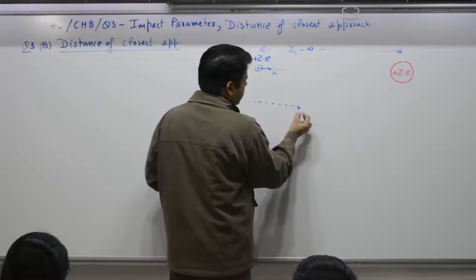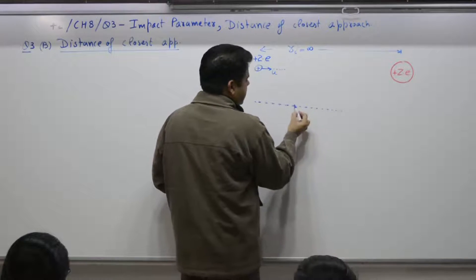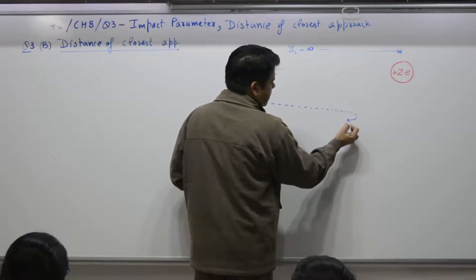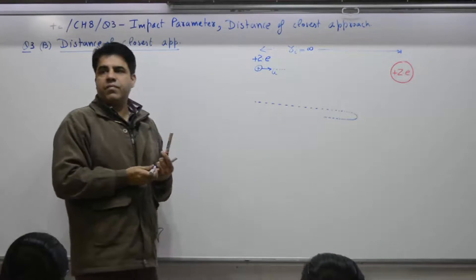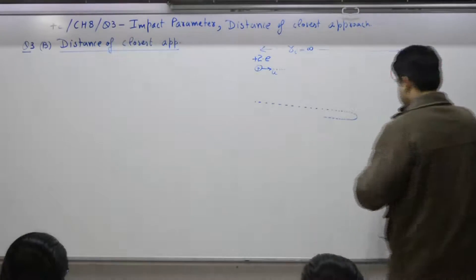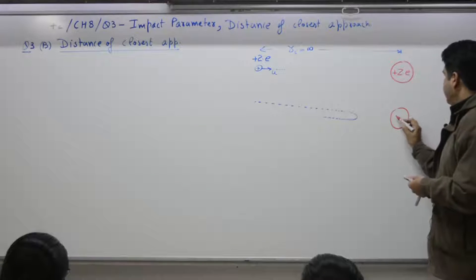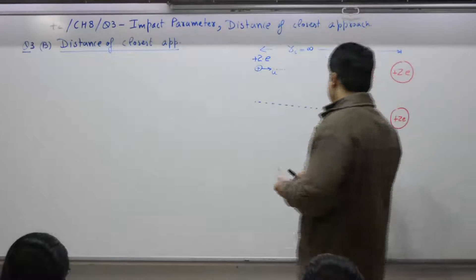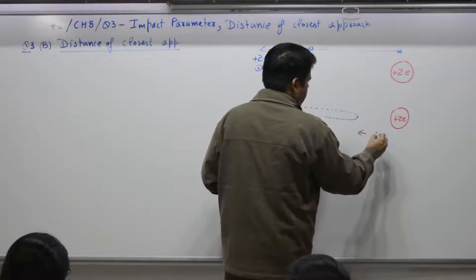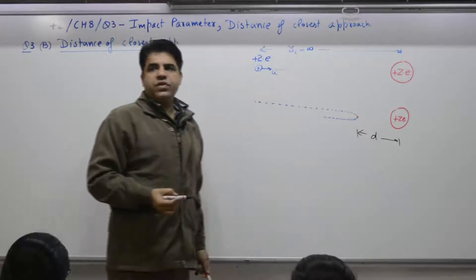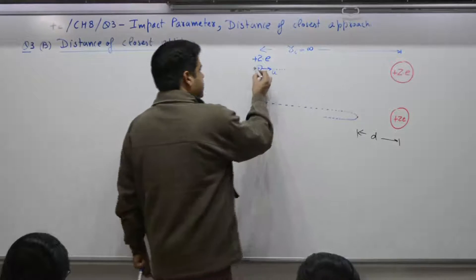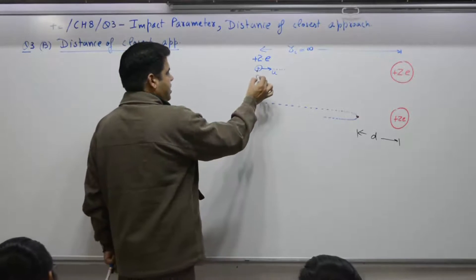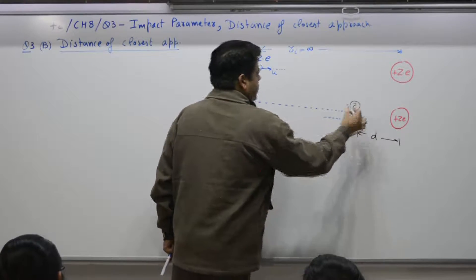So, as it moves towards, speed decreases. After some time, what we observe is speed decreases. 100, 50, 30, 20, 10, 0. When speed is 0, yes, it will turn back. Because this positive charge will repel. And so, this distance D is termed as distance of closest approach. This is what we want to find out. If this is to be termed as initial position, this is the final position or you can say this is position 1, this is position 2.